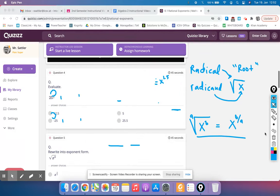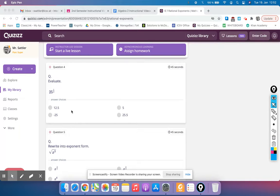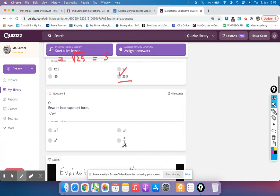Okay. So then how do we evaluate if we had 25 to the 1 half power? So this is the same thing as the square root of 25, which is equal to 5. Again, it does not mean 25 plus 1 half, which would be 25 and 1 half. It's not a mixed number. It is a rational exponent.